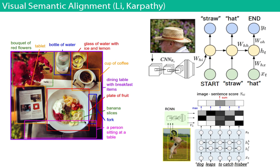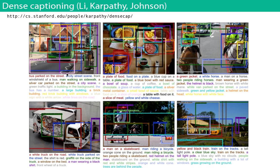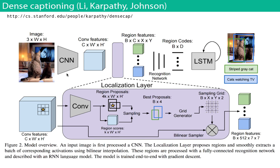The software for the next level of this was released just yesterday — that's how up-to-date this class is. It's doing full descriptions of subsets of the image — dense captioning. Banana slices in here, a cup of fruit there, a bottle of water, and so on. This is by the group at Stanford — Karpathy, Justin Johnson, and Fei-Fei Li.